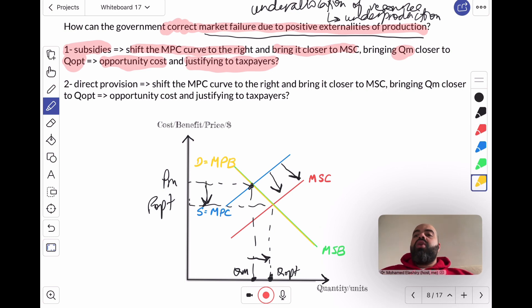direct provision. Subsidies and direct provision are the same because they both increase the supply of the product, they shift the MPC curve to the right and bring it closer to MSC, which brings QM closer to QOpt. Again, direct provision comes at an opportunity cost. This is money that could be spent elsewhere, providing better healthcare, providing better education and so on, and needs to be justified to taxpayers.